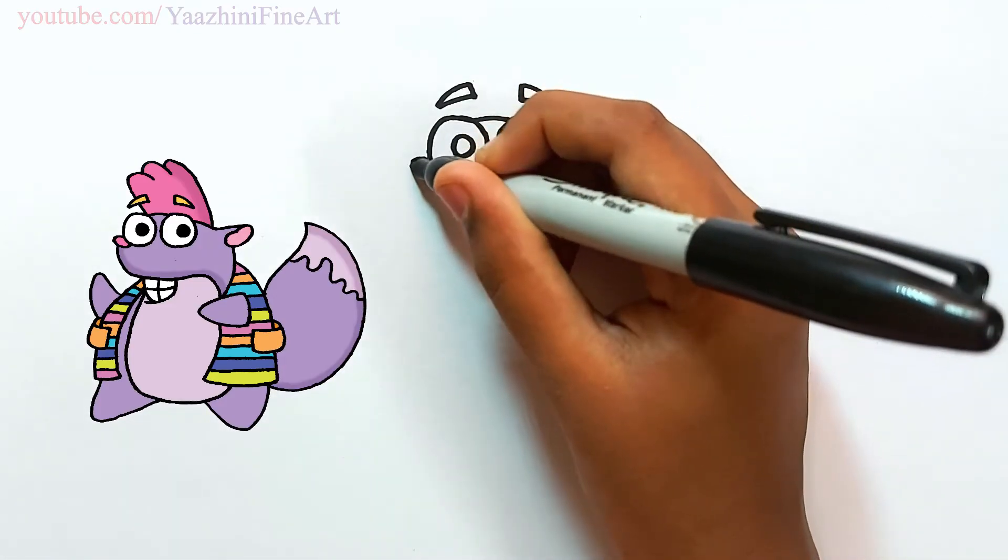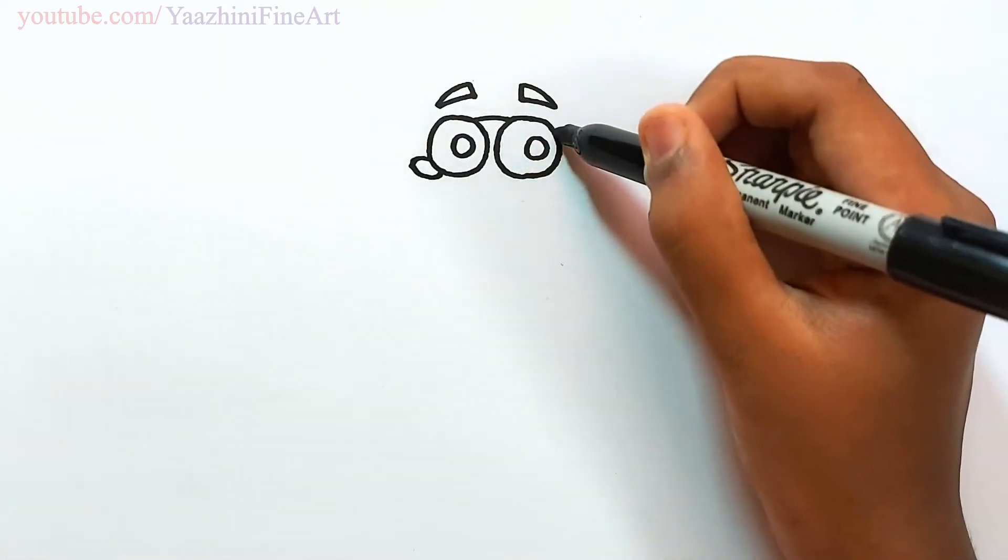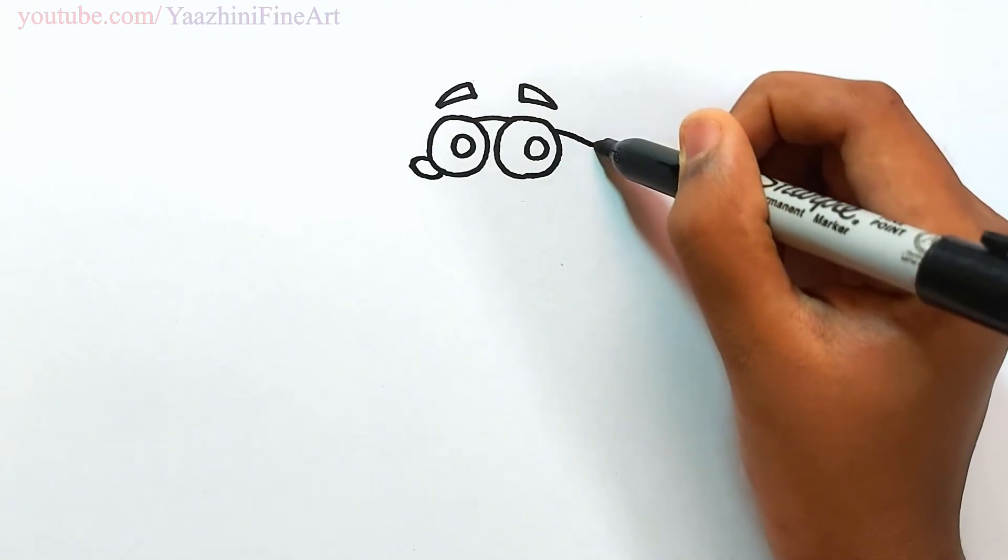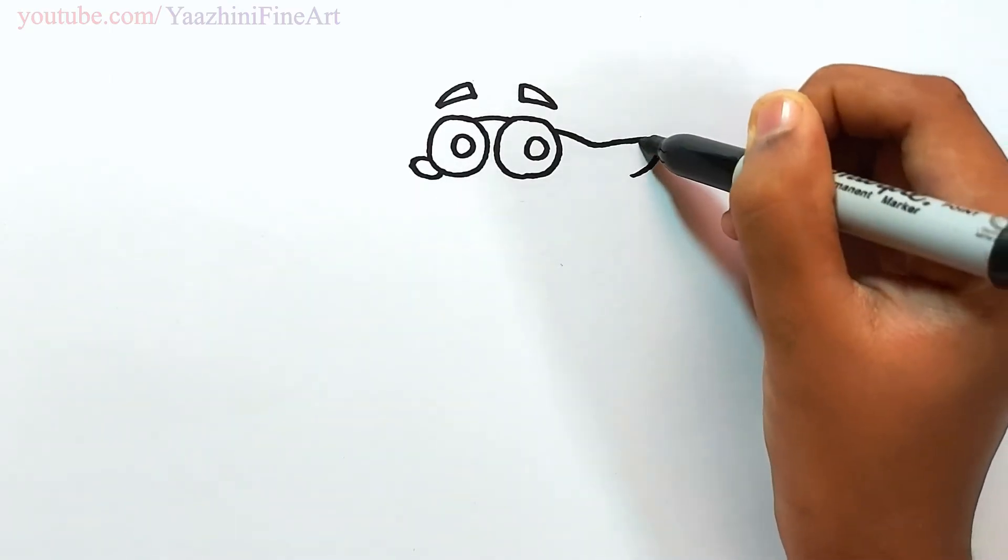Draw his nose. Continue to draw his face. Draw his ears. Draw the inner part of it.